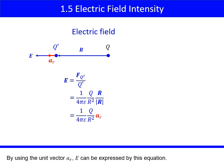By using the unit vector AR, E can be expressed by this equation. The unit is Newton per Coulomb, or equivalently, volt per meter.